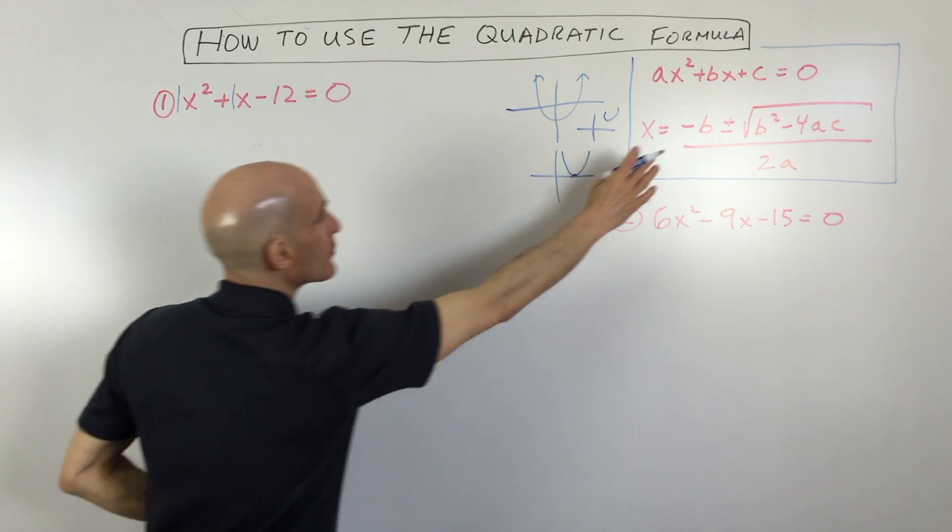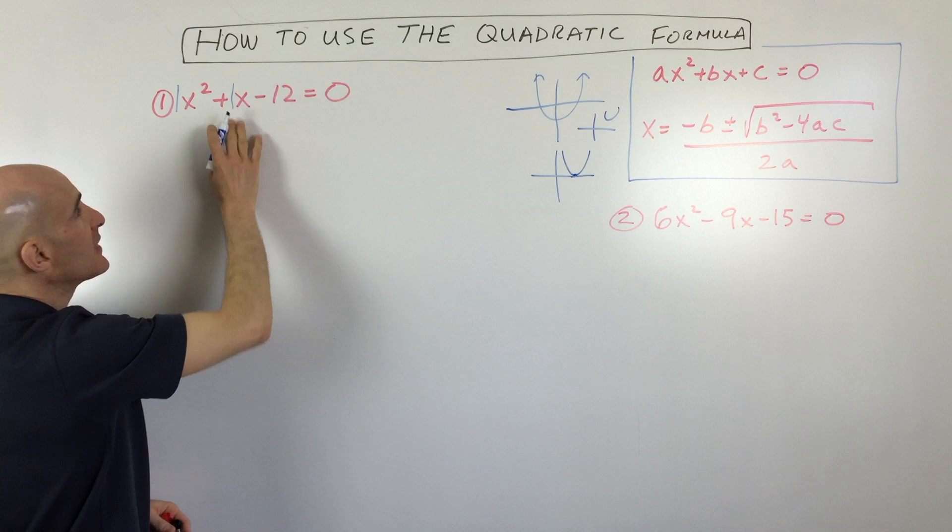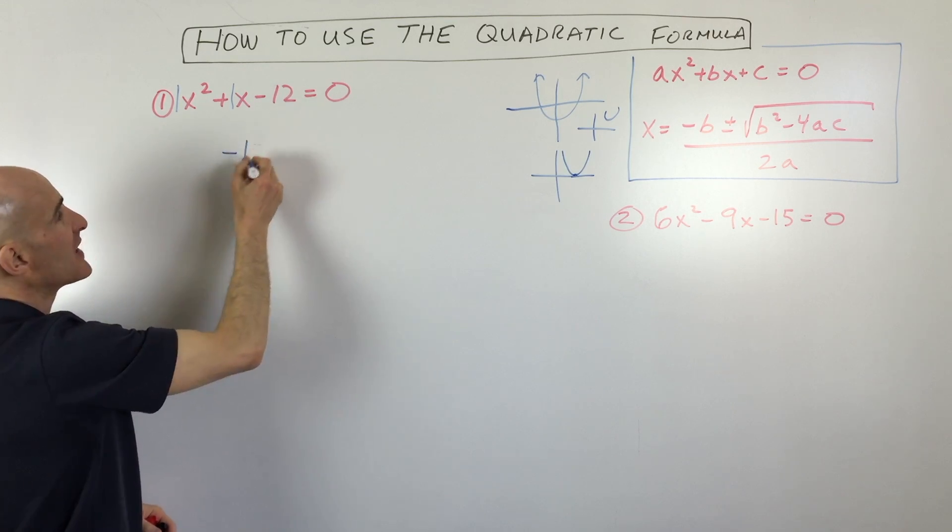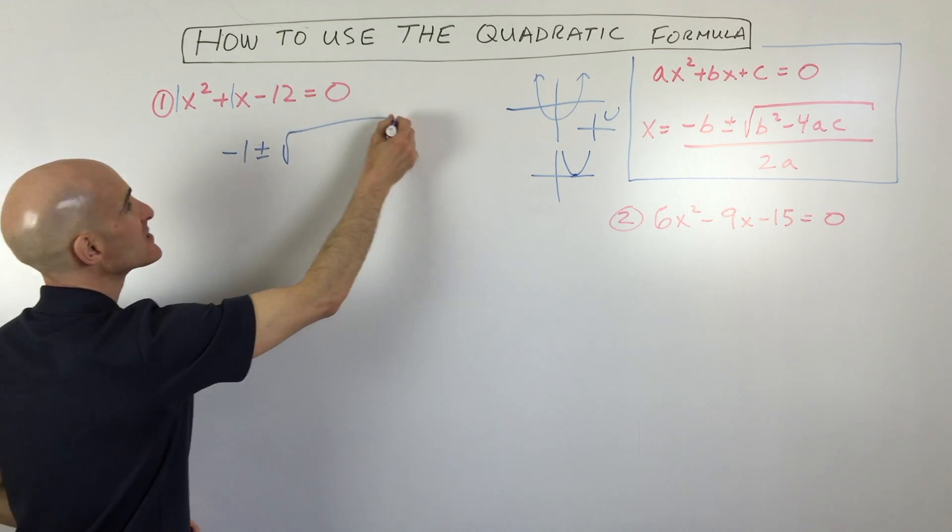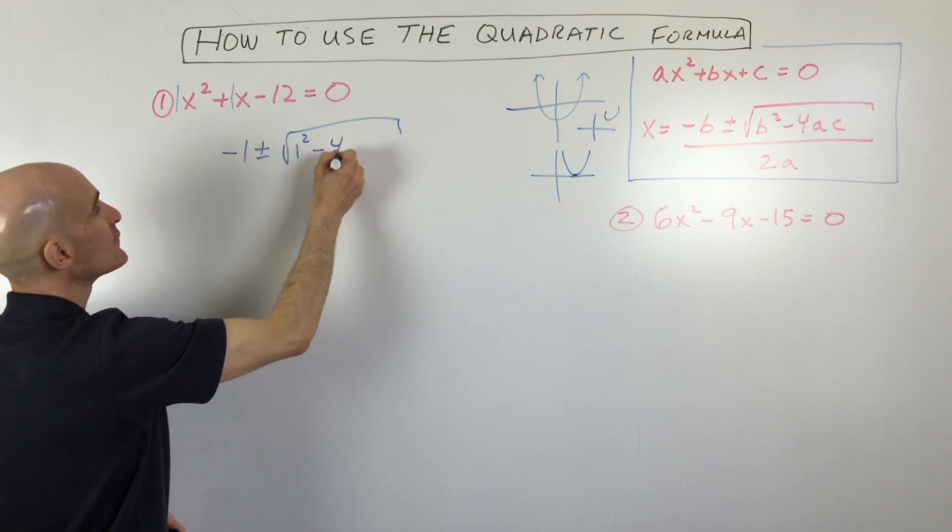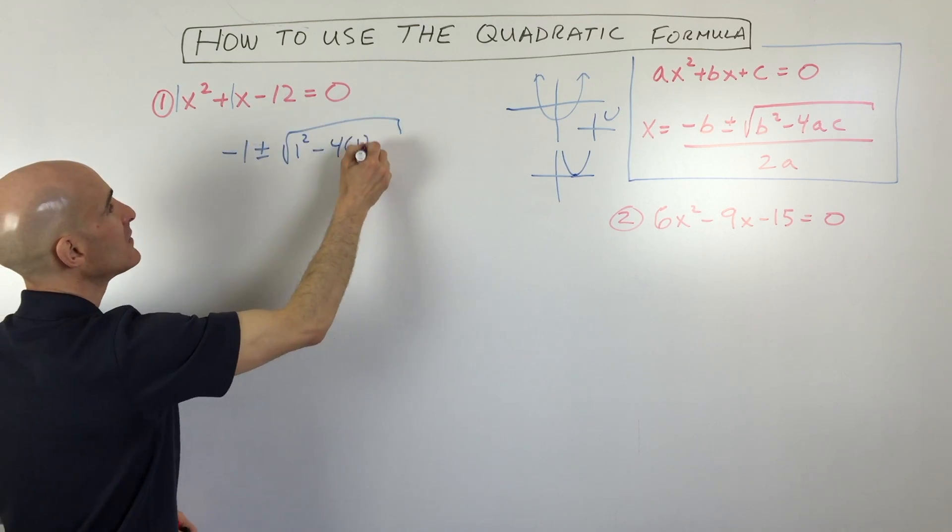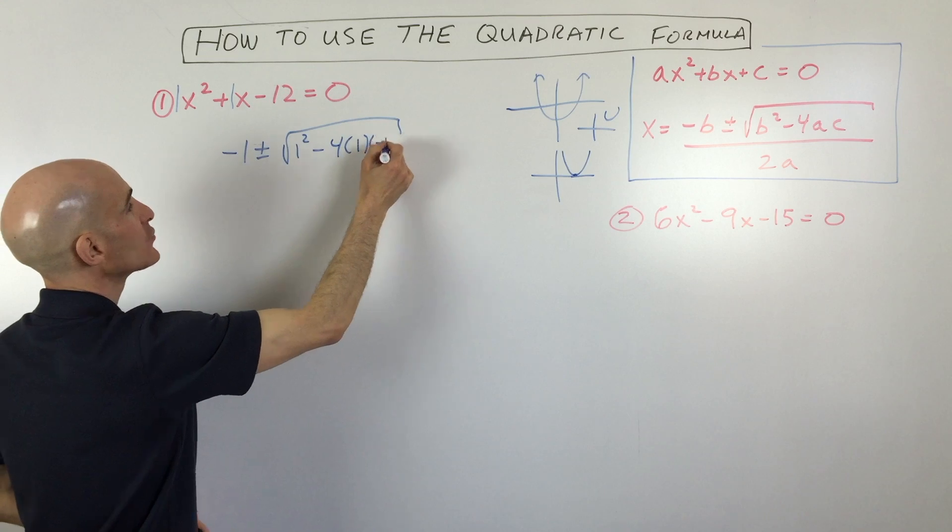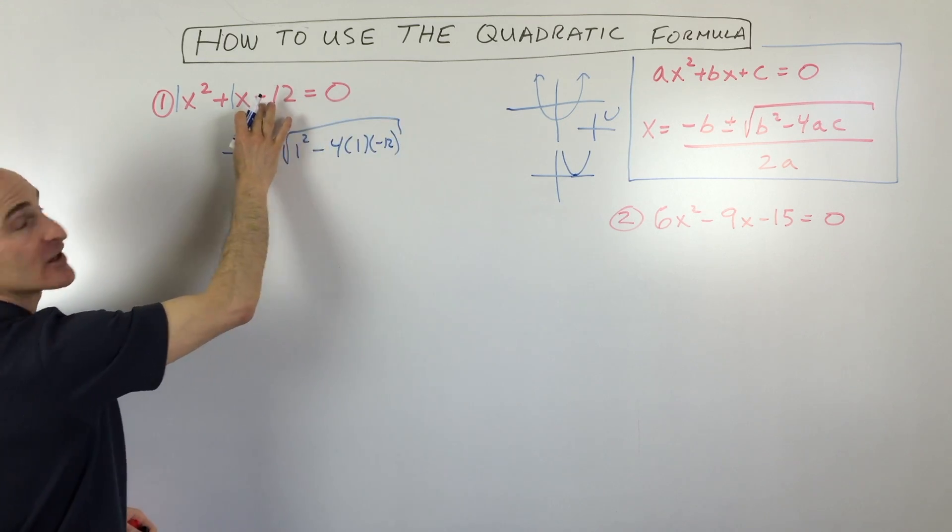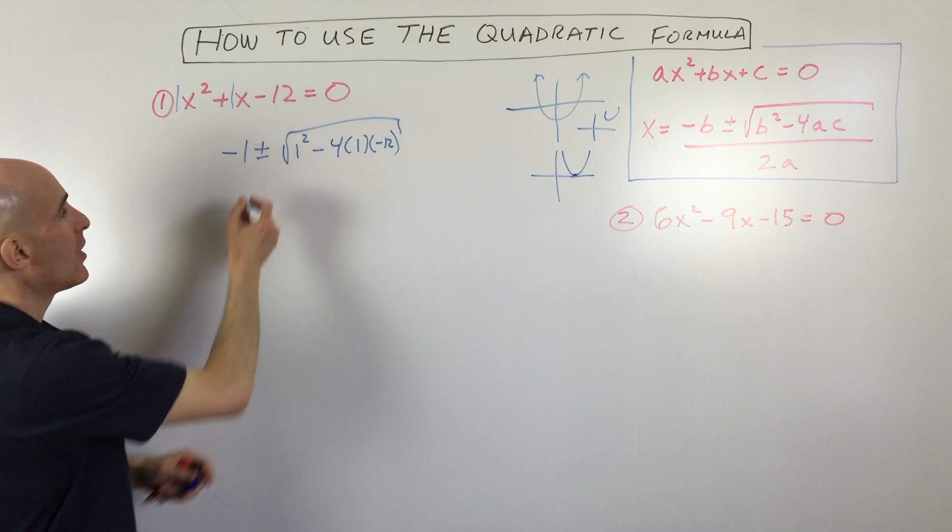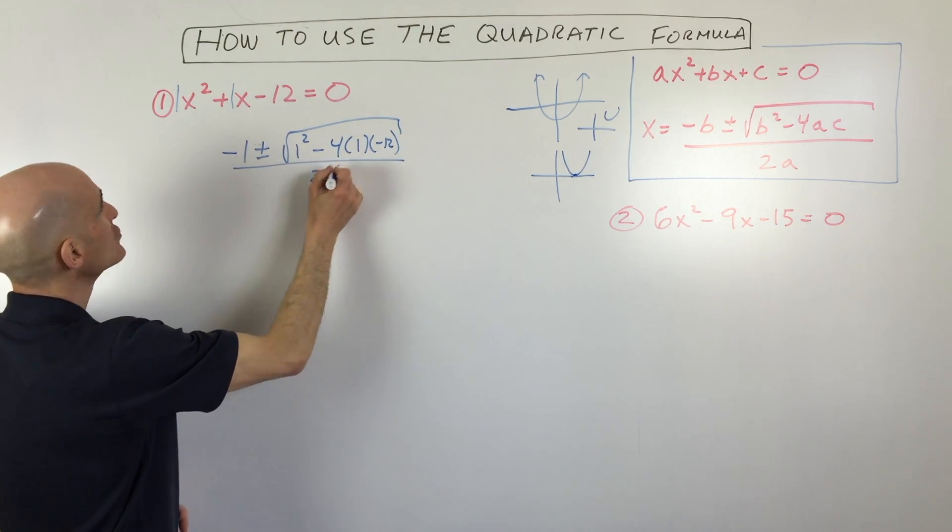So if we do our quadratic formula right here, we've got negative b, or the opposite of b, which is negative 1 plus or minus the square root of 1 squared minus 4 times 1 times c, which is negative 12. You want to make sure you capture that negative sign, that minus sign as a negative, all divided by 2 times 1.